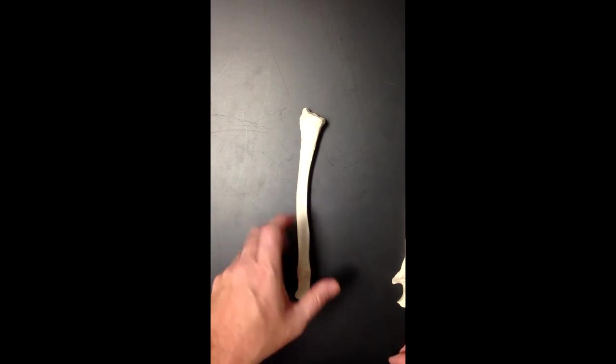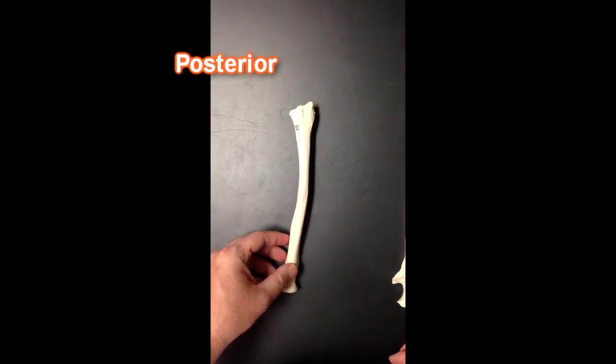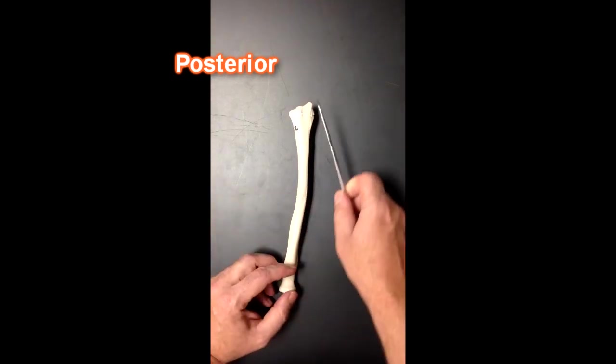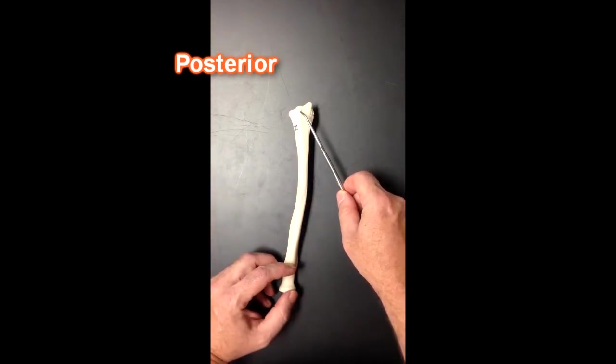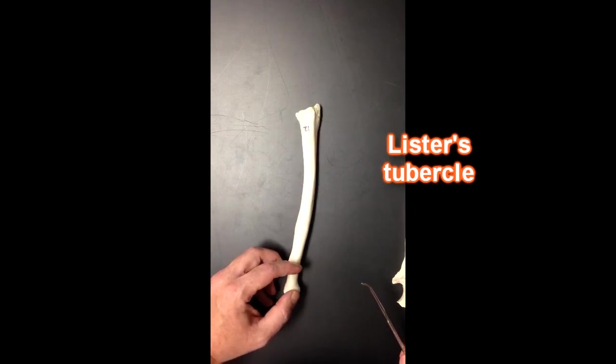Now if I turn this over and look at the posterior aspect there's another interesting feature on here that I want to show you. This bump right here is known as Lister's tubercle. It's on the posterior aspect of the radius.